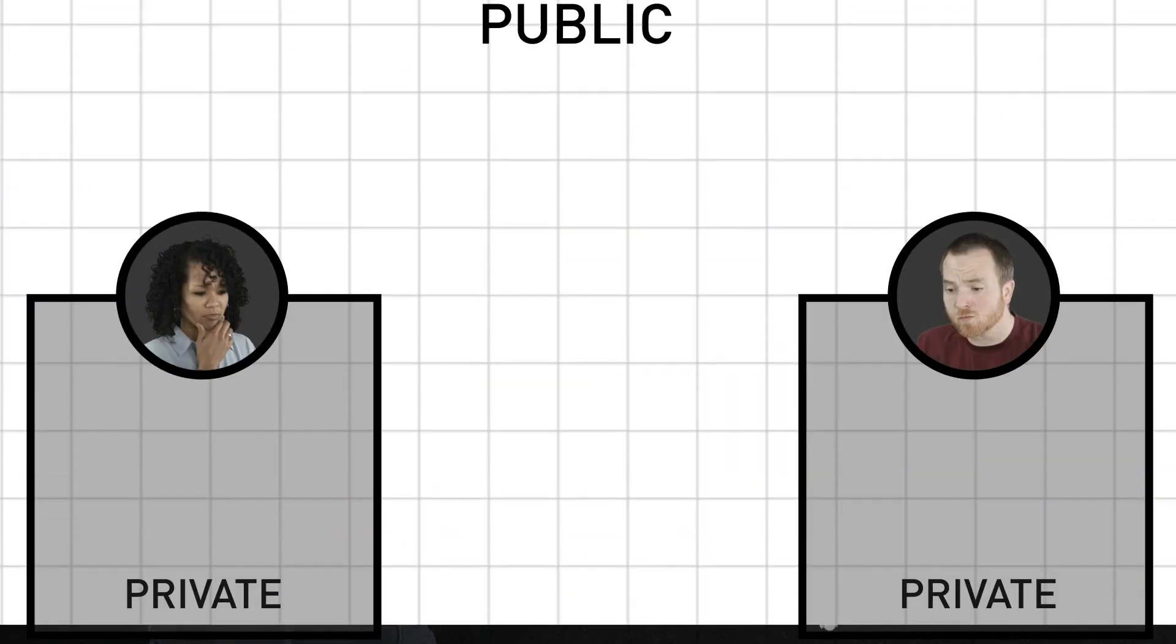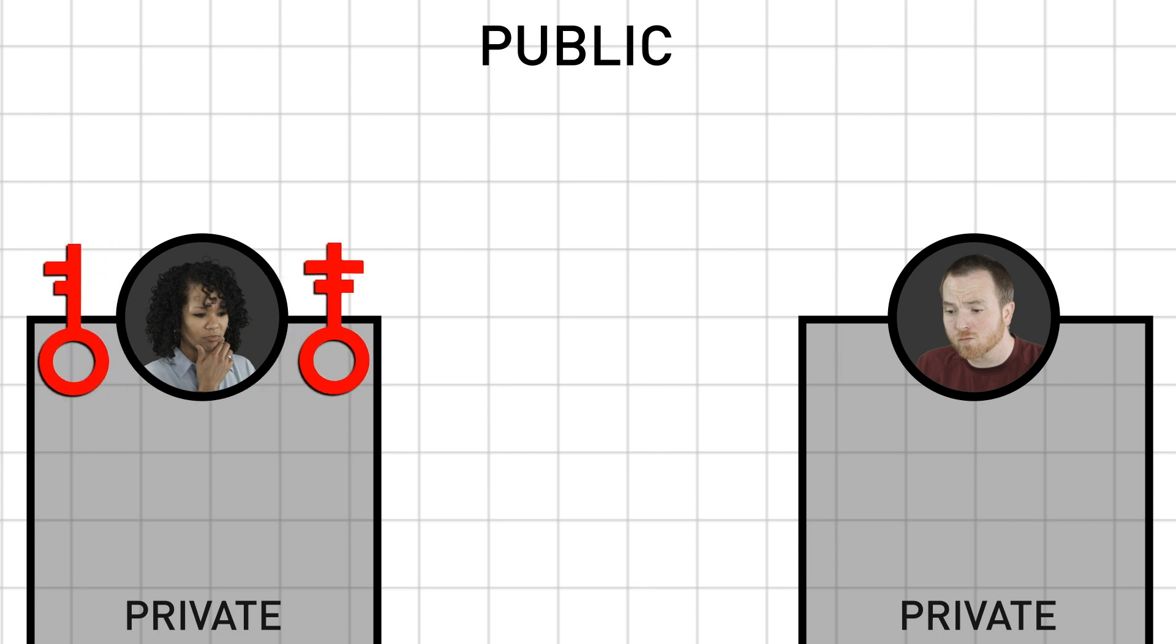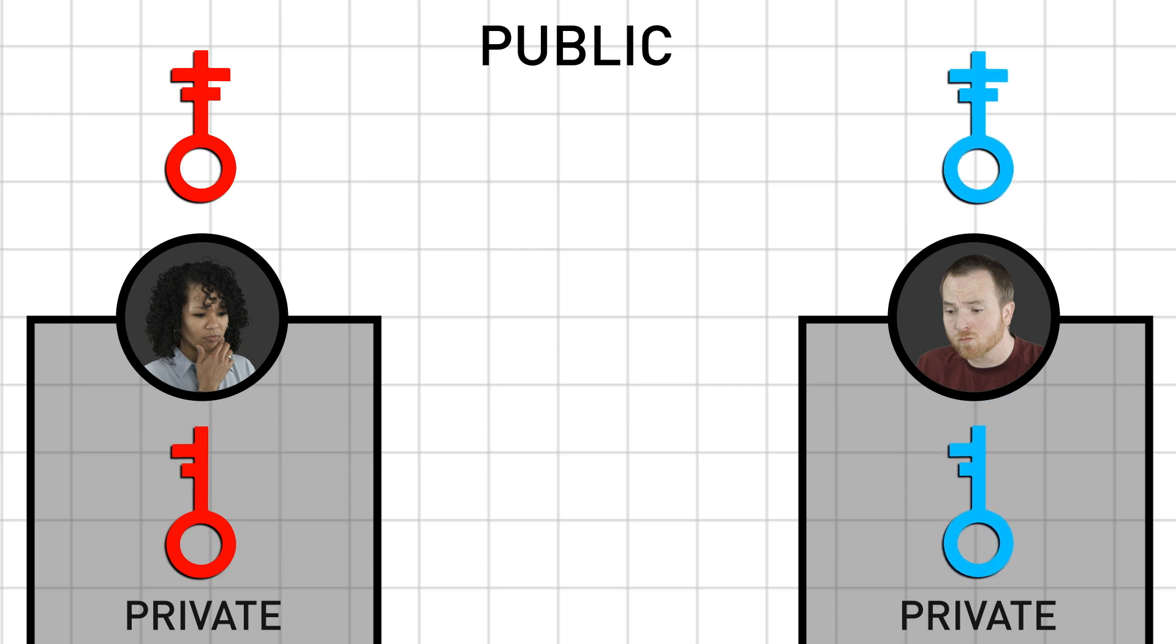Here are the steps. Alice generates two keys. She disseminates one publicly and keeps the other private, never sharing it with anyone, not even Bob. Bob follows suit. Now, to send Bob a message, Alice encrypts it with Bob's public key. Why? Because only Bob knows the counterpart key, that's his private key, so only he can decrypt that message. And of course, Bob could message Alice using her public key.